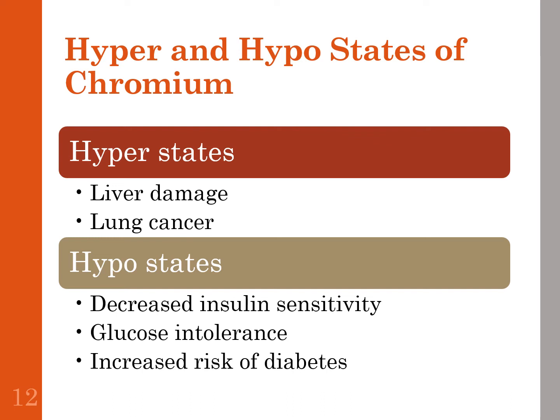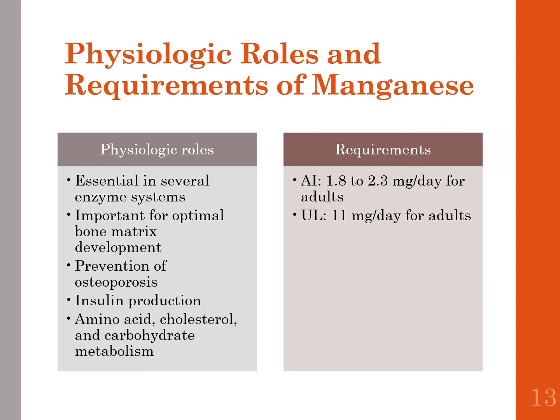Excessive chromium will cause liver damage or lung cancer. Severe hypo states of chromium result in decreased insulin sensitivity, glucose intolerance, and an increased risk of diabetes — all three essentially meaning the same thing.